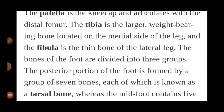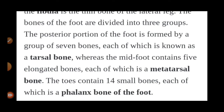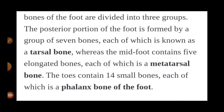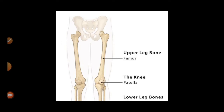The bones of the foot are divided into three groups. The first group forms the posterior portion of the foot — the back portion — made of seven bones called tarsals. The midfoot contains five elongated bones called metatarsals. Lastly, the forefoot has 14 small bones called phalanges.